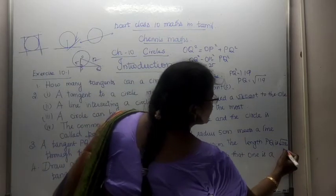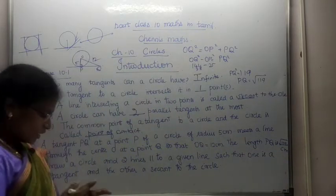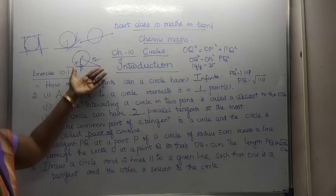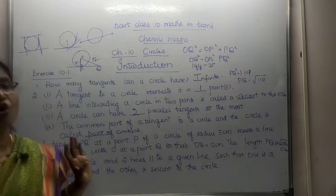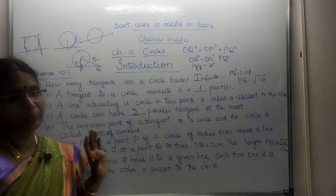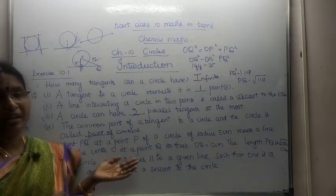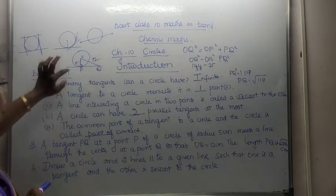We do not consider the negative value because it is the length of a tangent, and a length is always positive. Therefore, PQ equals positive root of 119 centimetres.